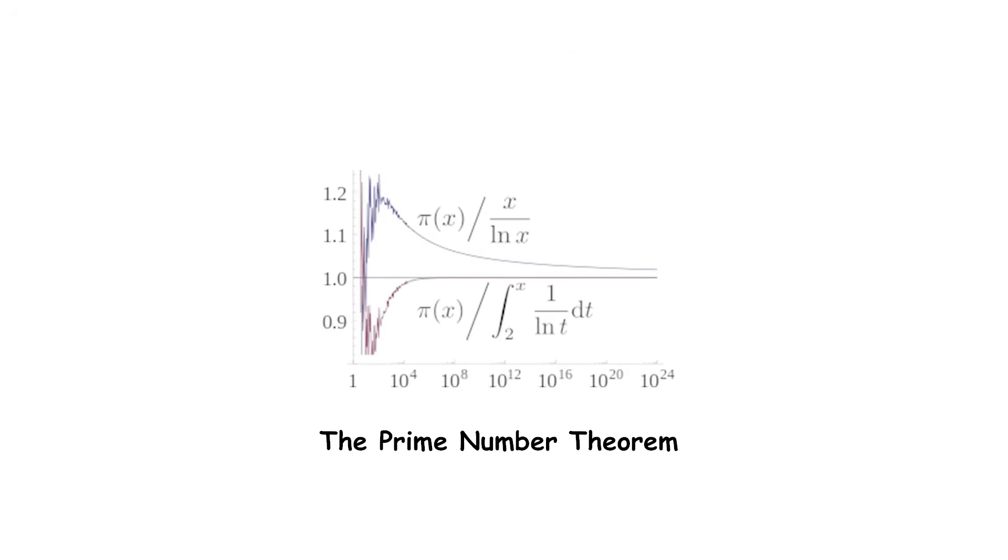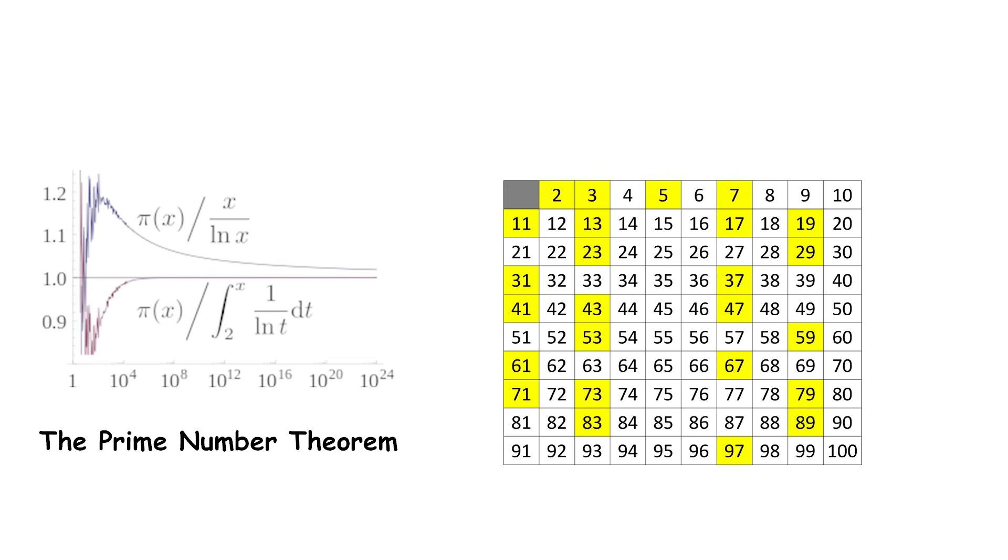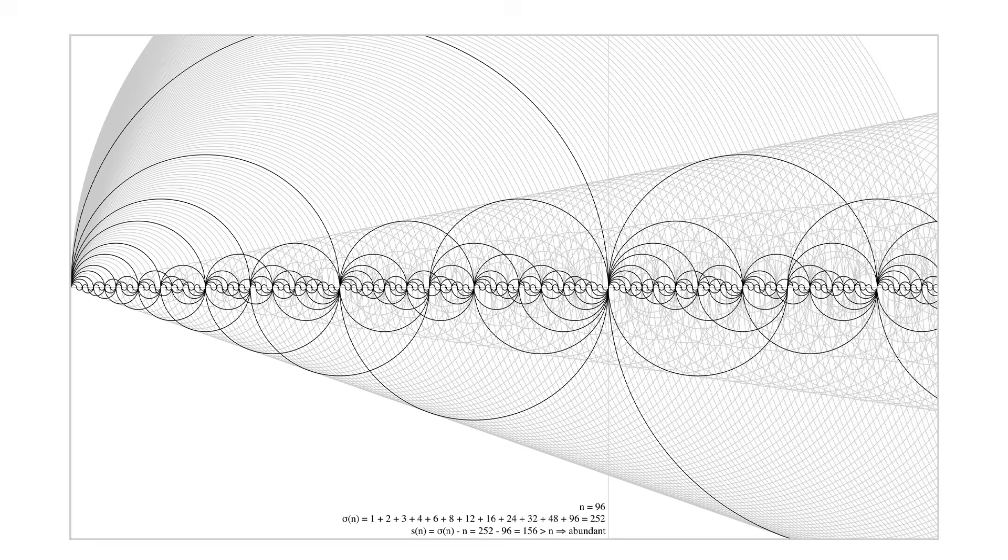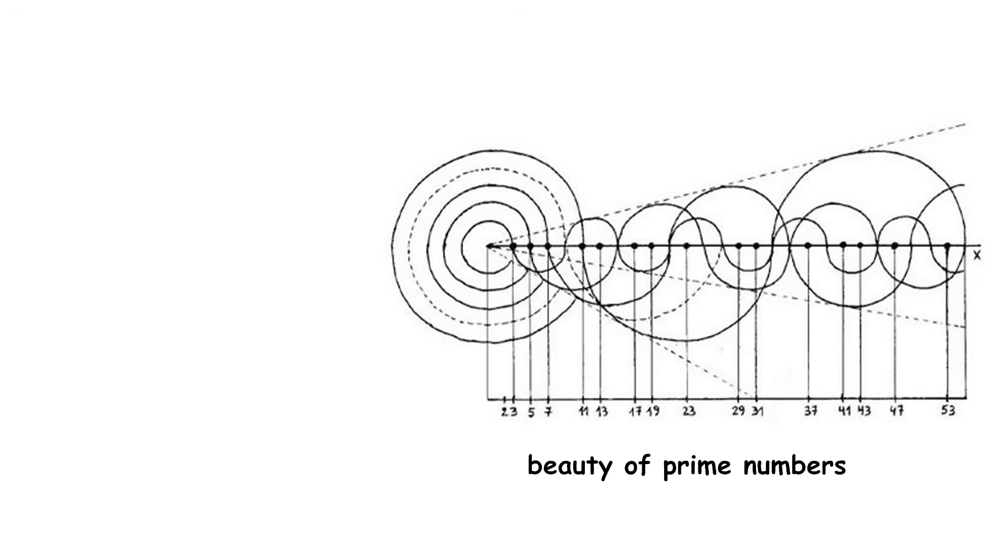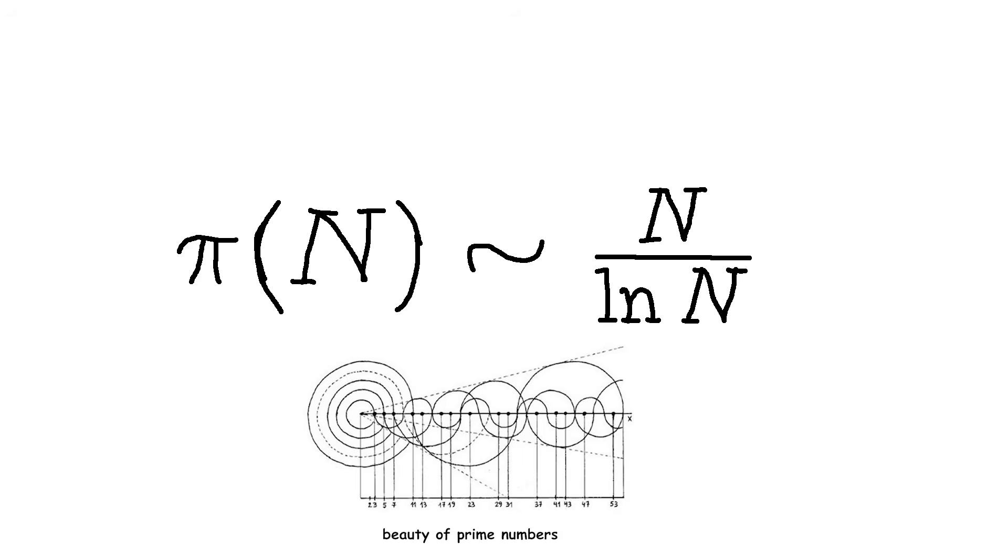The Prime Number Theorem. Prime numbers are whole numbers greater than one that can only be divided evenly by one and themselves. One of the basic facts about prime numbers is that there are infinitely many of them. The Prime Number Theorem goes a step further describing how the prime numbers are distributed along the number line. It states that the number of prime numbers less than or equal to a given number n is approximately equal to n divided by the natural logarithm of n. In other words, as n gets larger, the number of primes less than or equal to n is close to n over ln, where ln is the natural logarithm of n.